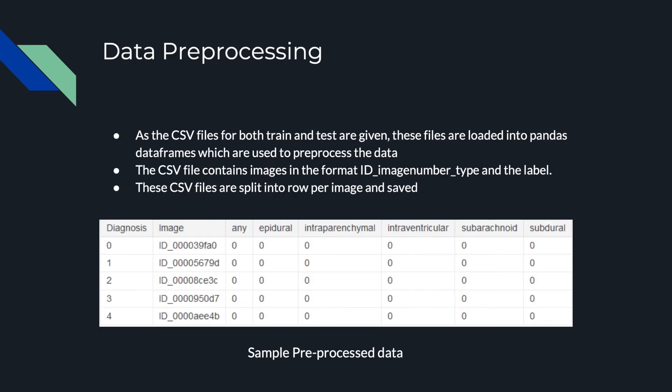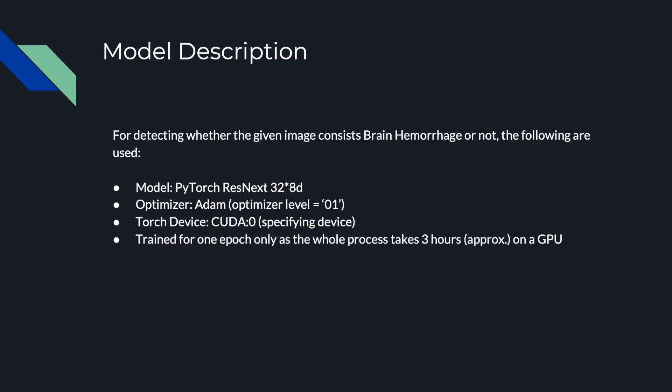For data pre-processing, the CSV files for train and test are loaded into pandas DataFrames. These files contain images in the format ID_imagename_type, with another column for labels. The CSV files are split into one row per image and saved. The type of intracranial hemorrhage is one-hot encoded for easier representation.